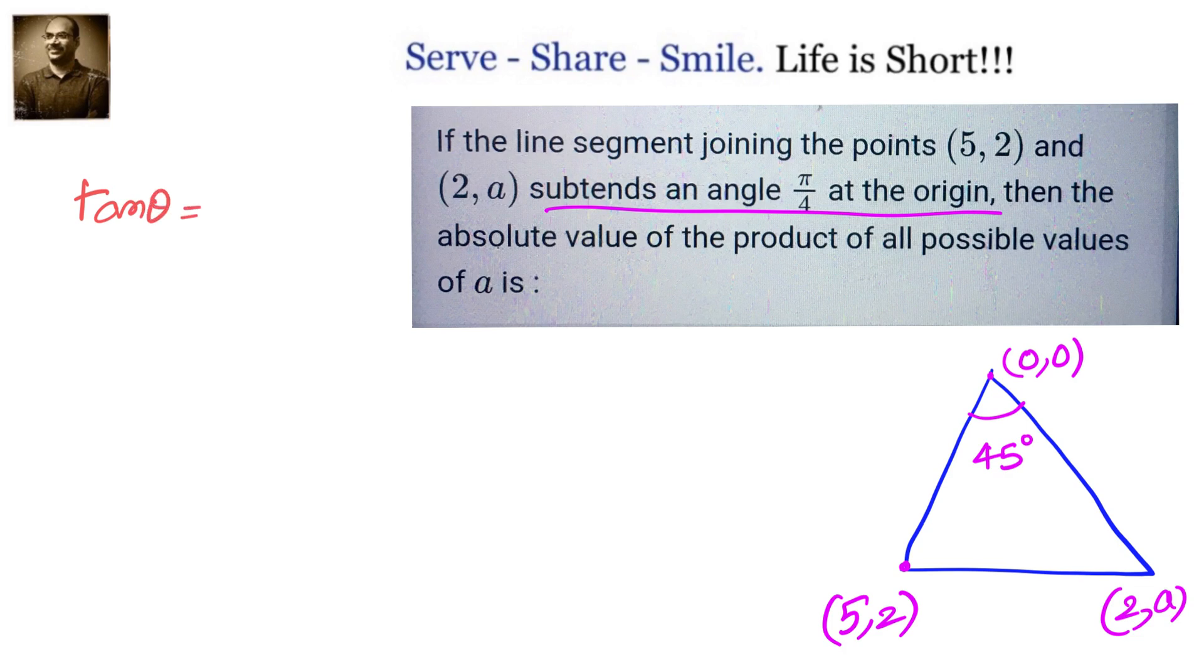This is the diagram we have been given. We will be using the angle between two straight lines formula, that is tan θ equals (m1 minus m2) divided by (1 plus m1 m2), to solve this problem. We can easily find out the slopes of the lines because we know (2,a) and (0,0) are points.